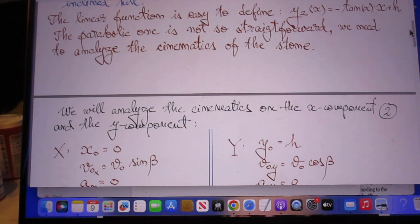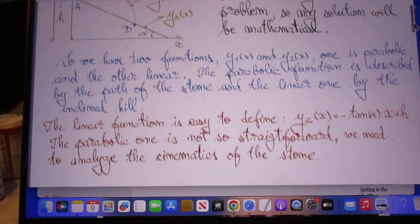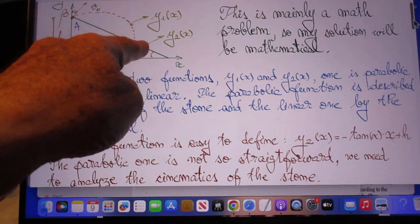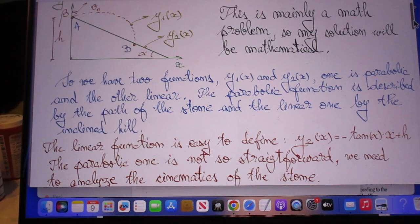The linear function is easily defined as follows: y_2(x) equals tangent alpha times x plus h minus tangent alpha.